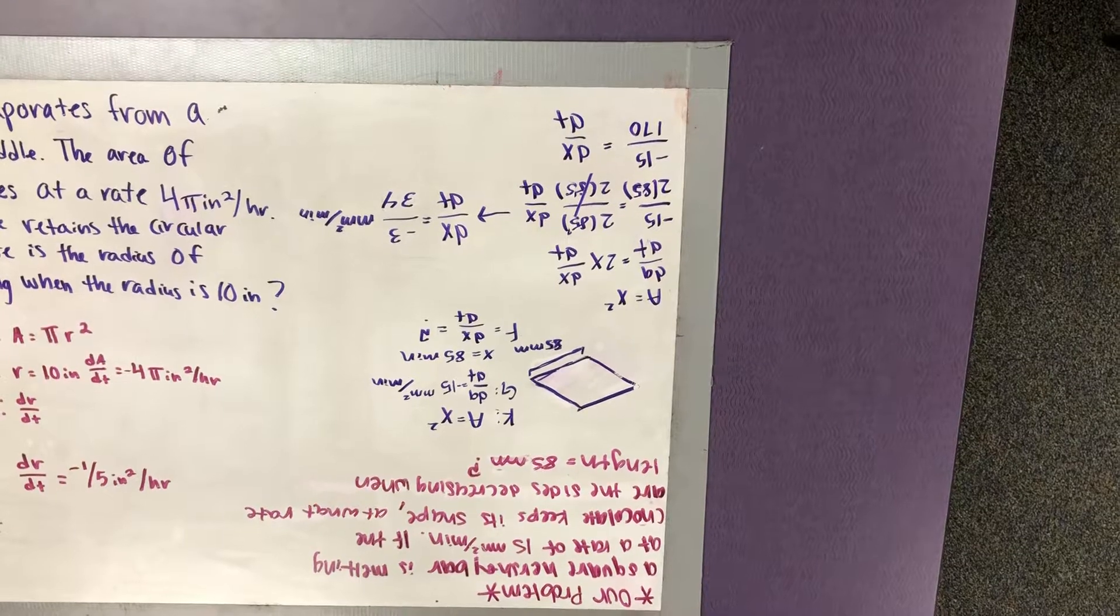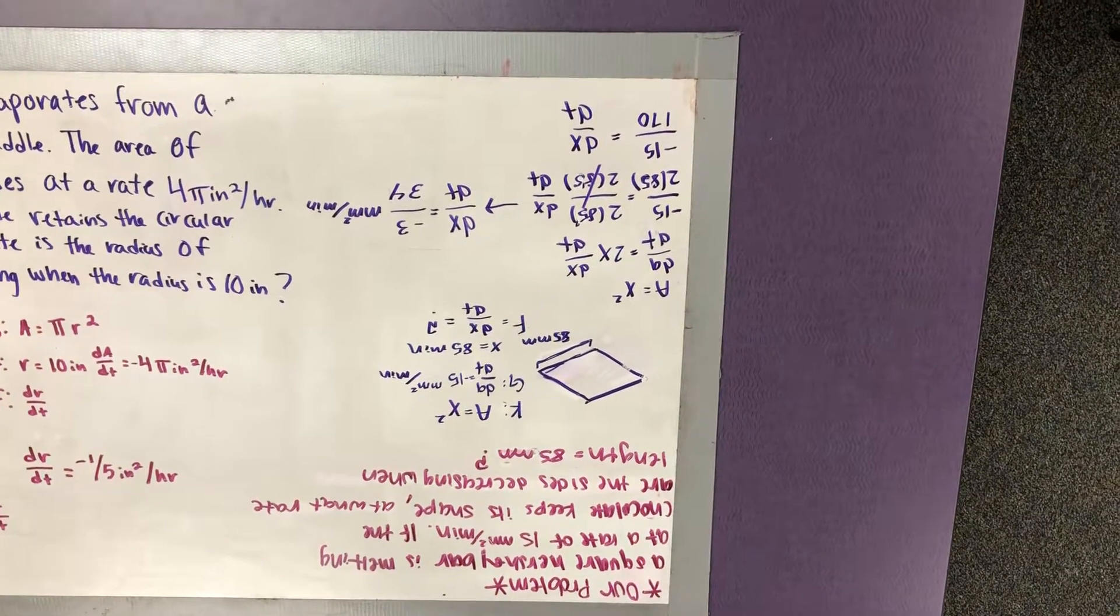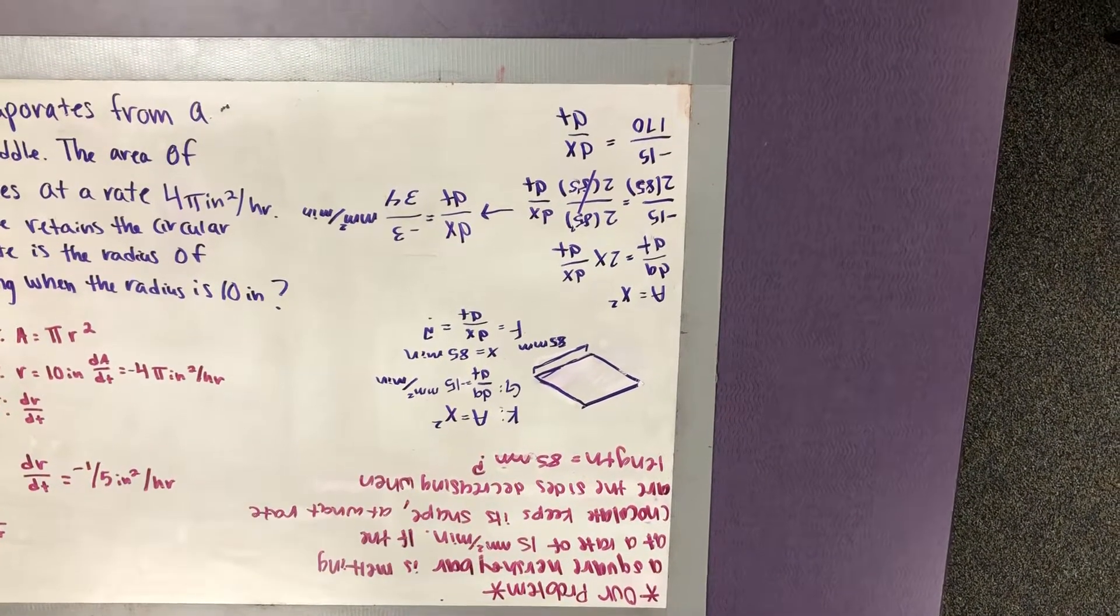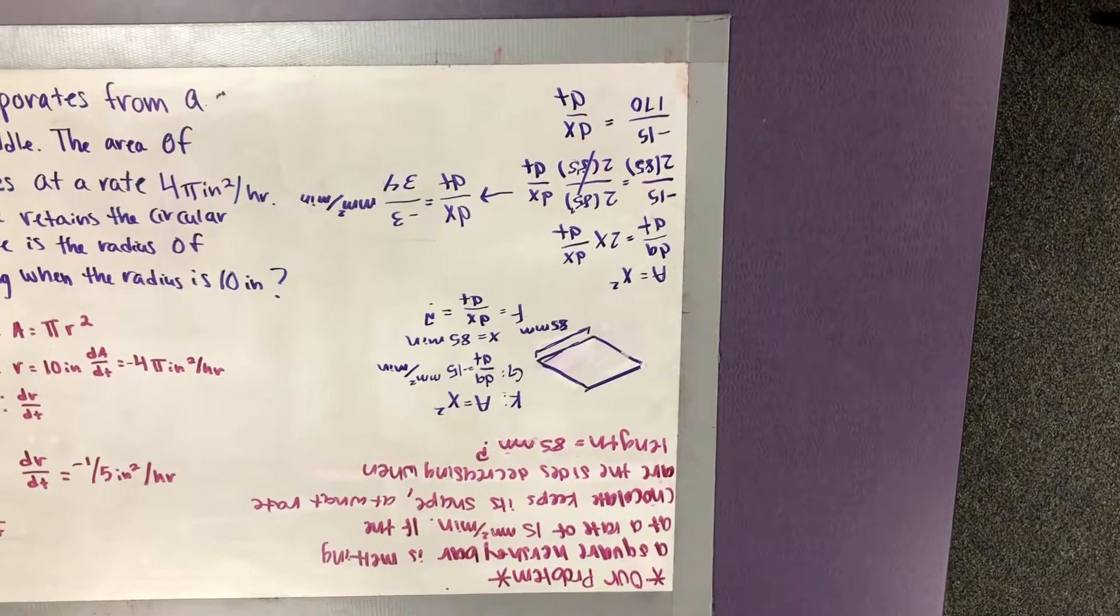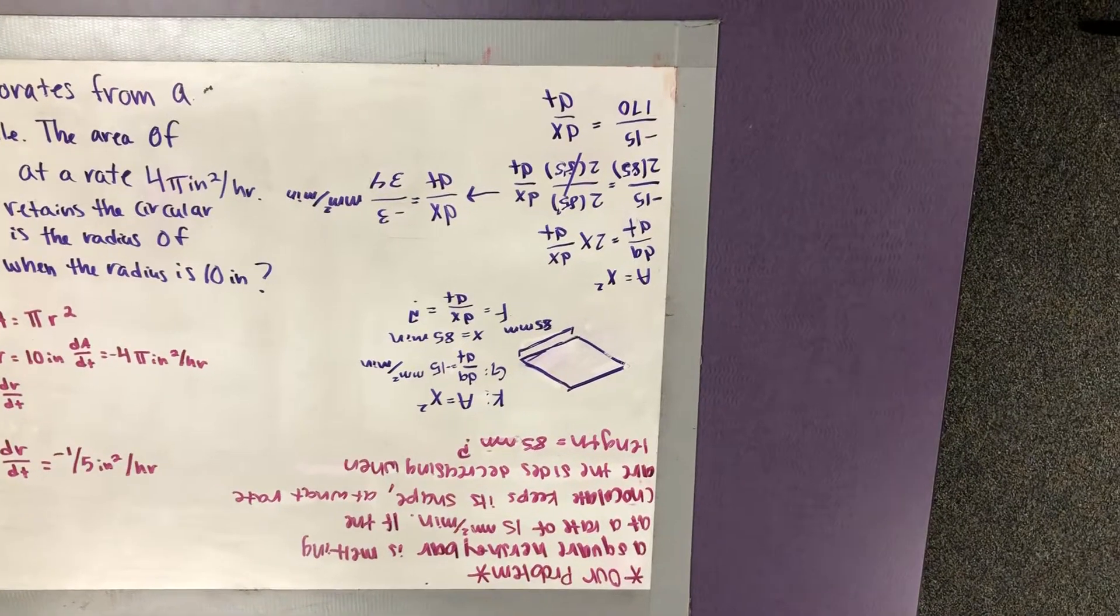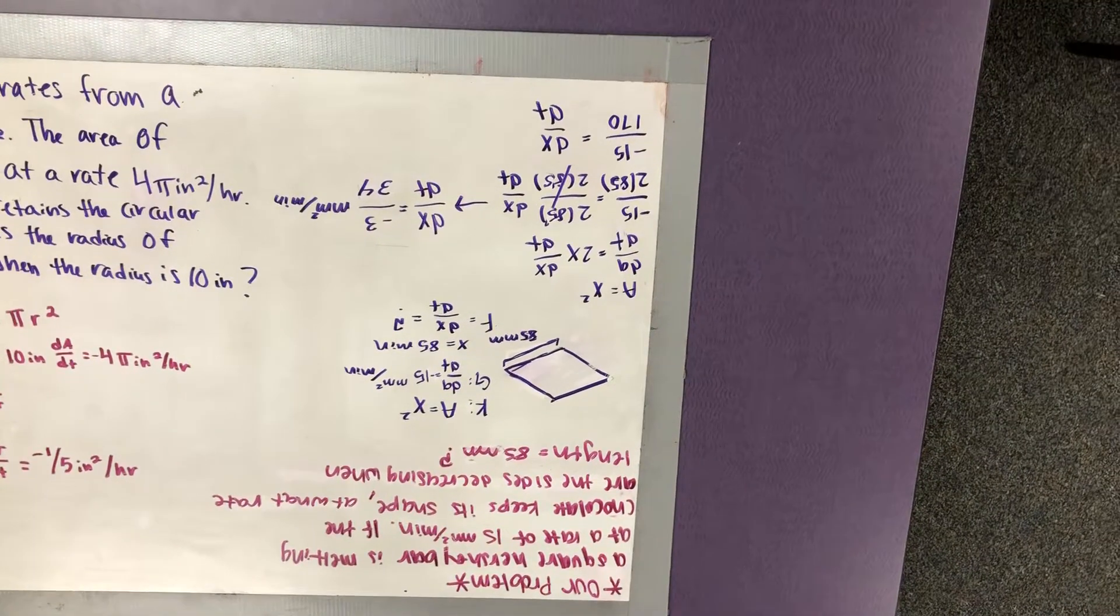And then after that, we multiplied 2 times 85, which is 170, and then we divided it by negative 15. We did negative 15 by 170.